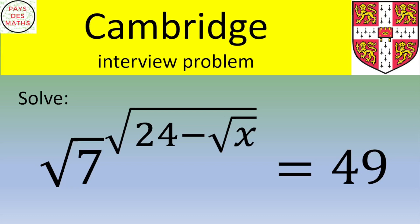Hello and welcome. In this video, we'll solve this exercise given during a Cambridge interview. We want to find the value of x such that √7^(√24 - √x) = 49.